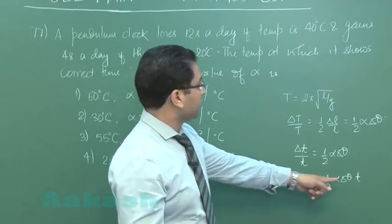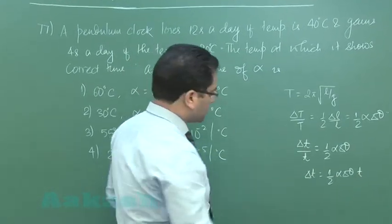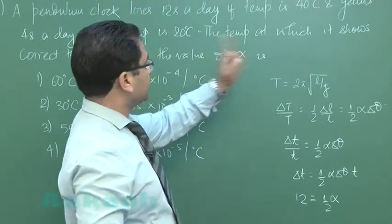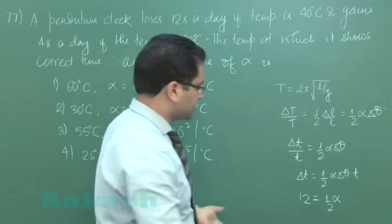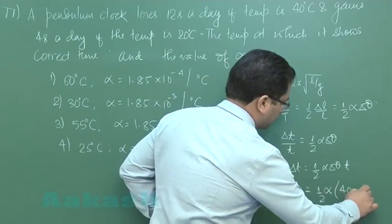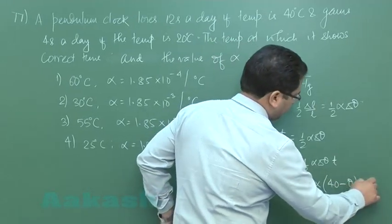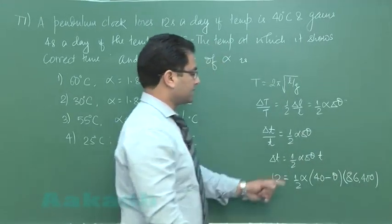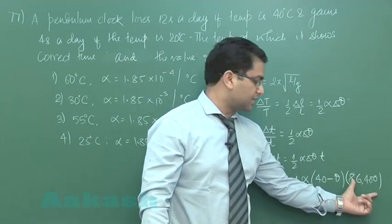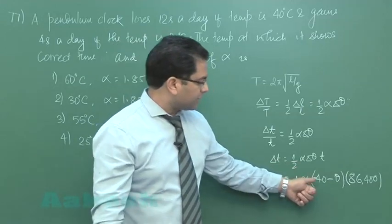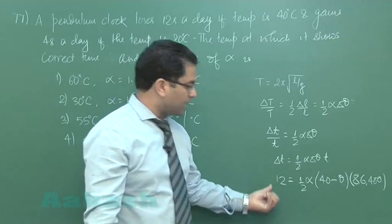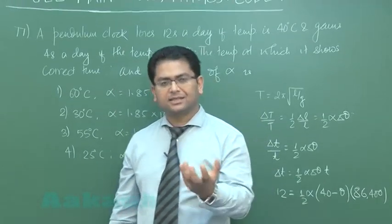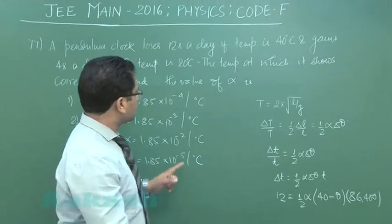If the total time of operation is one day, that is 86400 seconds, then in the first case: 12 = ½ · α · (40 − θ) · 86400, where θ is the correct temperature at which the clock gives correct time. At 40°C the clock is losing time, so 40 is above the correct temperature. This is equation 1.